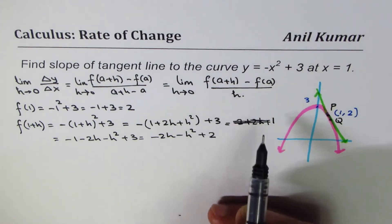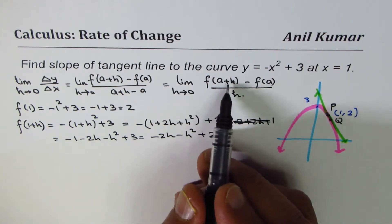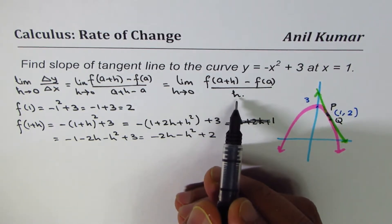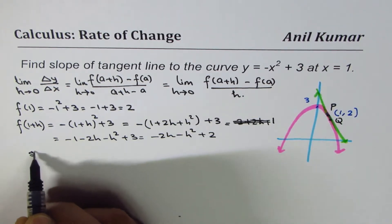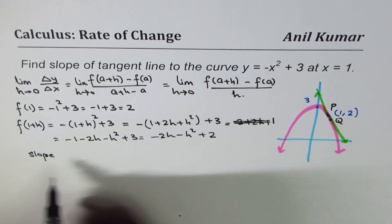Now, slope of the tangent is rise over run, which is right here, change in y over change in x value. So we can write slope. We also call this as instantaneous rate of change.